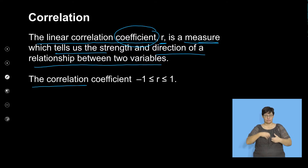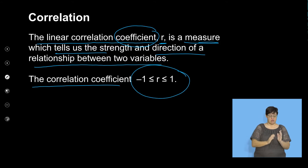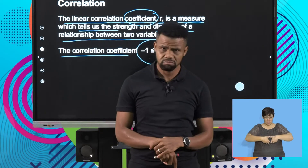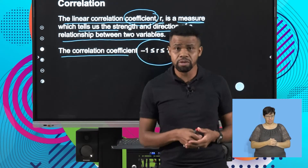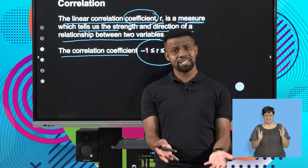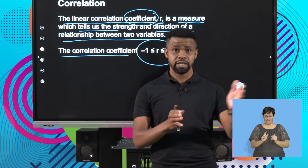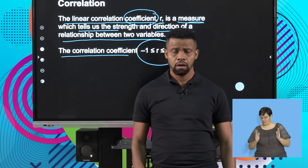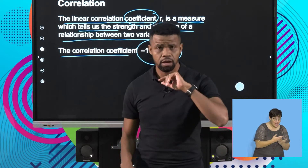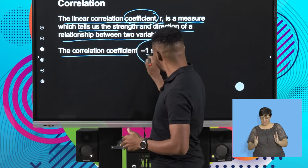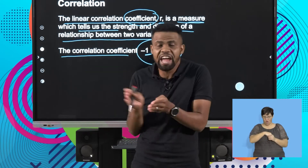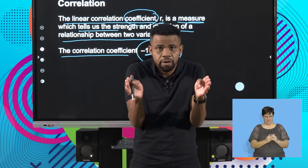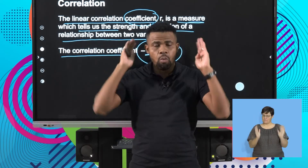The correlation coefficient is between negative 1 and 1. So can I have a correlation coefficient of 2? No, because 2 is not between minus 1 and 1. But can correlation be 0.7? Yes, because 0.7 is between negative 1 and 1. Can correlation be negative 3? No — negative 3 is smaller than minus 1, not in the range between minus 1 and 1. The correlation coefficient is between minus 1 and 1.